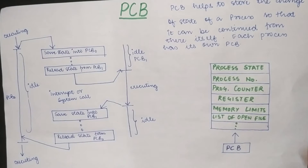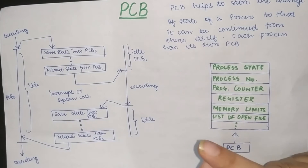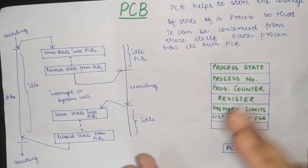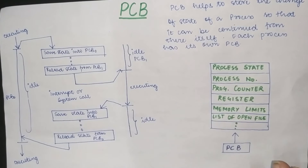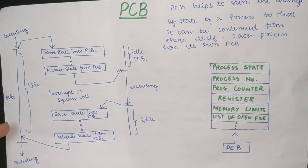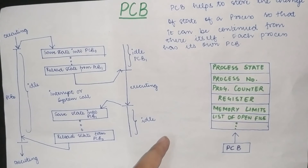One thing we need to focus on is that every process will have a different PCB — every process will have its own individual PCB. This is PCB 0 for process 0, and this is PCB 1 for process 1.